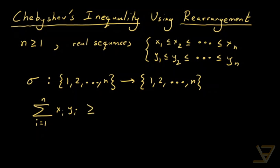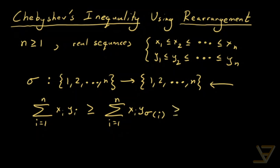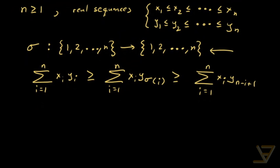This is greater than or equal to the sum from i=1 to n where we permute the y's in any possible way using the bijection, and that is greater than or equal to the sum from i=1 to n of xi·y(n−i+1), which reverses the order of the y's, pairing up the x's and y's in reverse order. That's the rearrangement inequality, and its proof is not easy, but we're going to freely use it to prove Chebyshev's inequality.